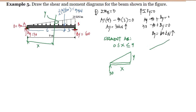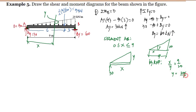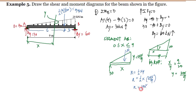Using ratio and proportion — since the maximum load intensity is 20 at the full length of 9 — we have x is to y as 9 is to 20, so y equals 20x over 9. The resultant R of the triangular load on the cut segment equals the area of the load diagram: one-half times x times y, which is one-half times x times 20x over 9, giving R equal to 10x squared over 9.